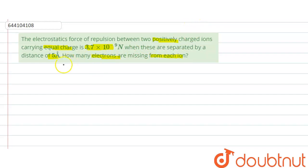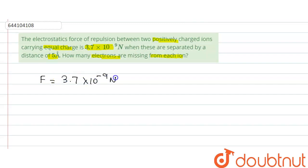The values which have been given: the force F is given as 3.7 × 10⁻⁹ newton. The distance or separation between them is given as 5 angstrom, or we can write it as 5 × 10⁻¹⁰ meter.